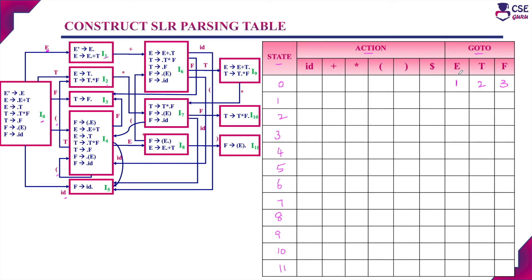For terminal symbols from I0: the transition with open bracket goes to I4 — since open bracket is a terminal symbol, we enter it in the action part as a shift move, S4. Similarly, the transition from I0 with terminal symbol ID goes to I5, so we enter S5 in the action part. Now I0 state is complete.